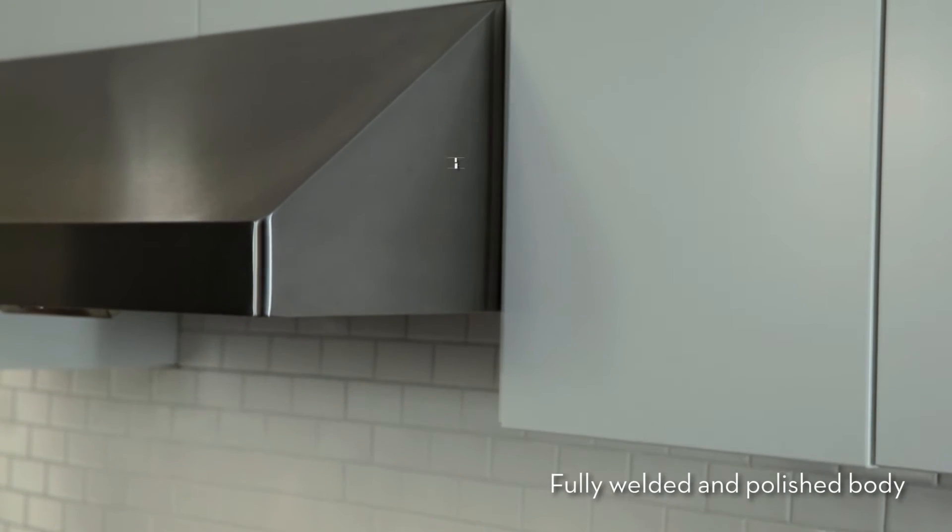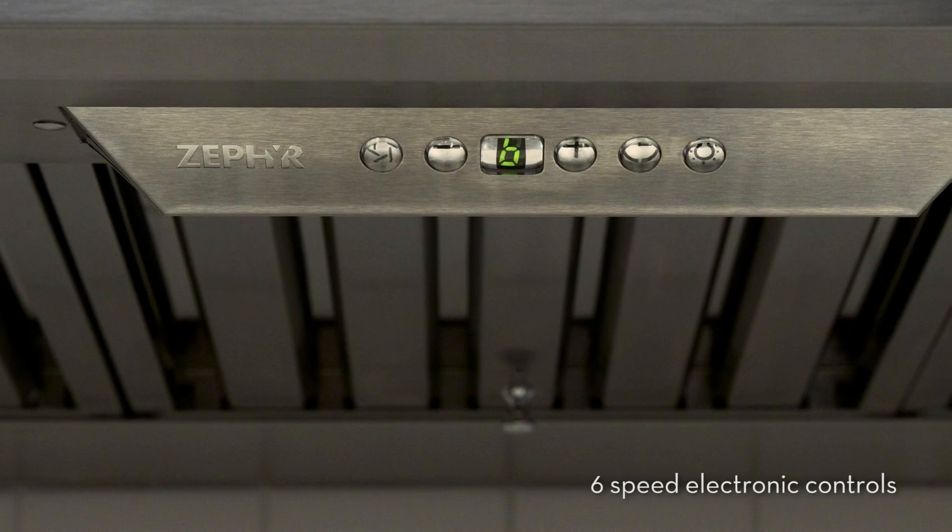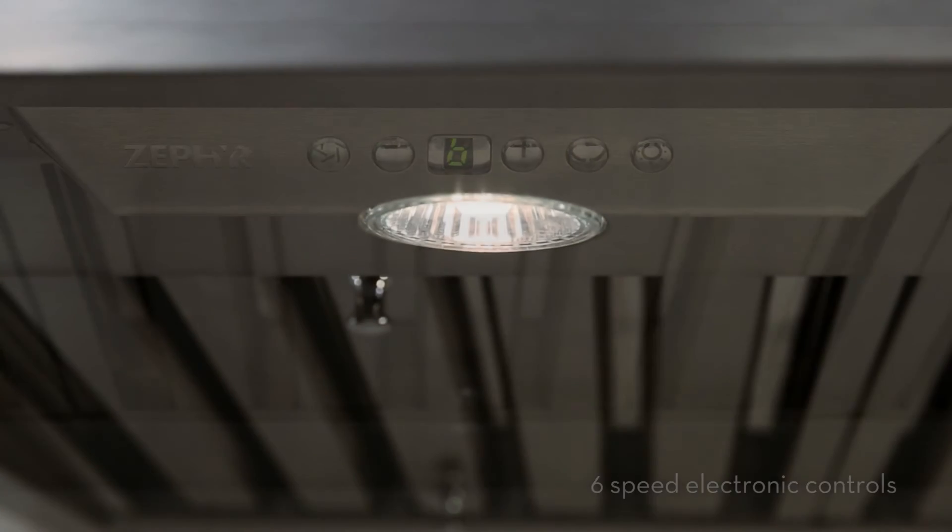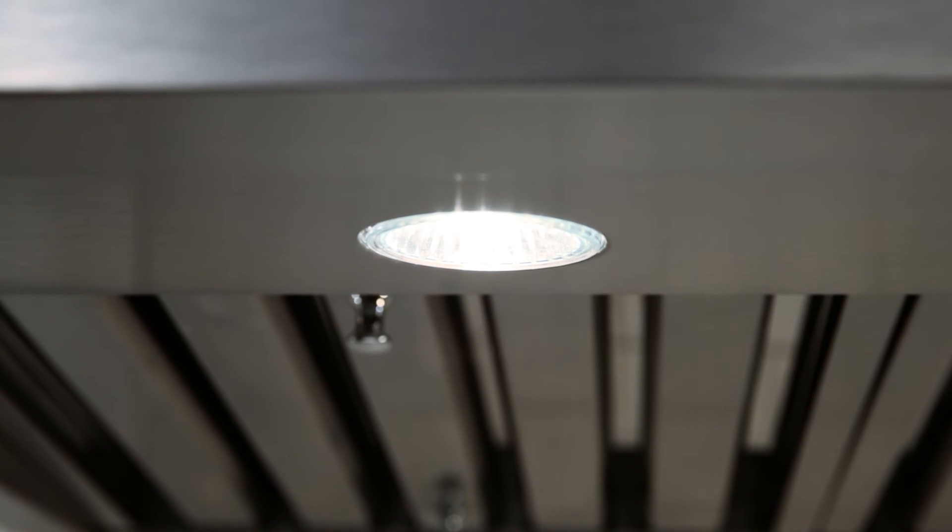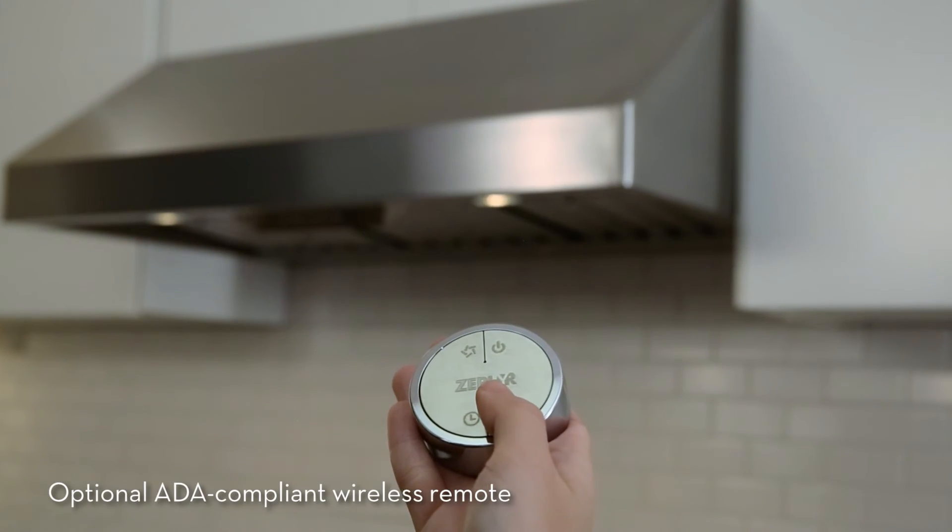Tucked neatly underneath Tempest 1's 11-inch welded and polished body are 6-speed electronic controls and dual-level halogen lighting, while an optional wireless remote is available to put you in control from up to 15 feet away.